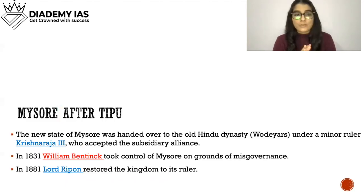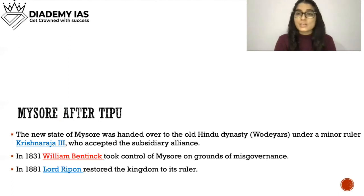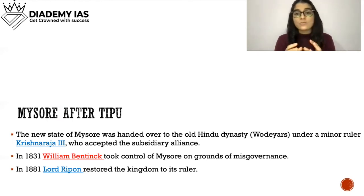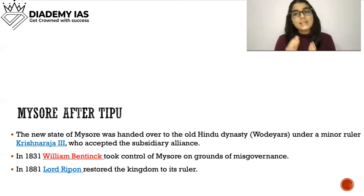Mysore after Tipu: The English chose a boy from the earlier Hindu royal family of Mysore as the Maharaja and imposed on him the subsidiary alliance system. The new state of Mysore was handed over to the old Hindu dynasty, the Wodiyars, under a minor ruler Krishna Raja III. In 1831, William Bentinck took control of Mysore on grounds of misgovernance. Then in 1881, Lord Ripon restored the kingdom to its ruler.